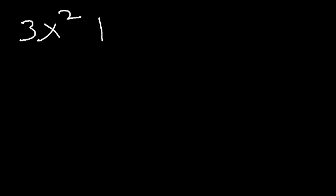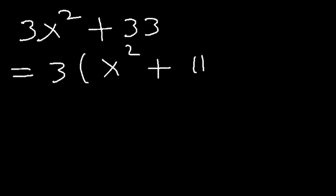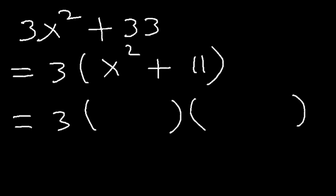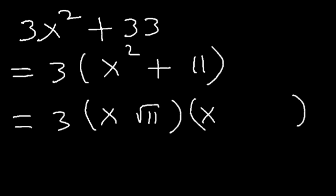Now what about 3x squared plus 33? We can see that the greatest common factor is 3, giving us x squared plus 11. We have the sum of two numbers, so we need to use a square root and an imaginary number. The square root of x squared is x, and the square root of 11 is root 11. Because we have a plus sign we need to add i, so the answer is 3 times x plus i root 11 times x minus i root 11.